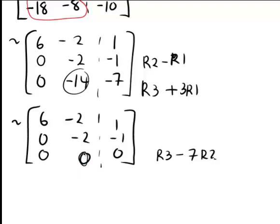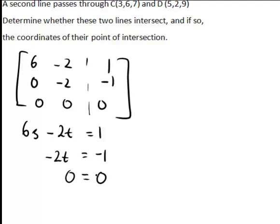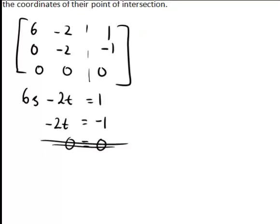Writing out the final equations from the reduced tableau — remembering the first column has coefficients of s and the second column has coefficients of t — the first line gives 6s minus 2t equals 1. The second line gives negative 2t equals negative 1. The final line gives 0 equals 0, which is a redundant but true statement. The fact that we get 0 equals 0 confirms the two lines do intersect. If instead we had obtained something like 0 equals 5, there would be no consistent solution and the lines would not intersect.